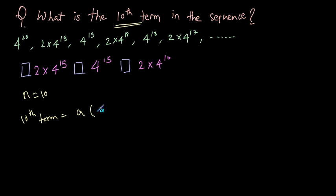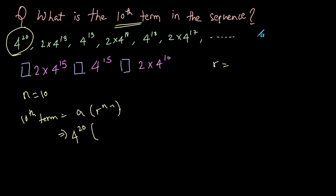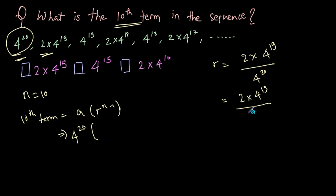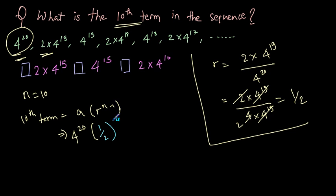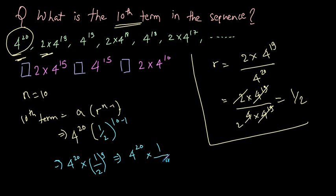The 10th term is a into r raised to n minus 1. The first term a is 4 raised to 20. To find r, take two consecutive numbers: 2 into 4 raised to 19 divided by 4 raised to 20. Since 4 raised to 20 can be written as 4 into 4 raised to 19, the 4 raised to 19 terms cancel, giving r equal to 2 by 4, which is 1/2. So the 10th term is 4 raised to 20 into (1/2) raised to 9.